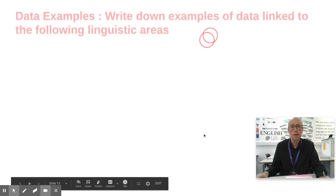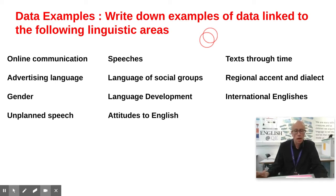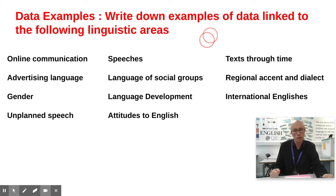For online communication, there are all sorts of data you could collect — for example, tweets by various comedians all talking about a specific topic. You could look at comments that members of the public leave in response to certain YouTube clips; those would make interesting comparisons. You could collect text messages from different age groups, such as different members of your family from grandparents to parents to you, and see whether there are significant differences linked to age.